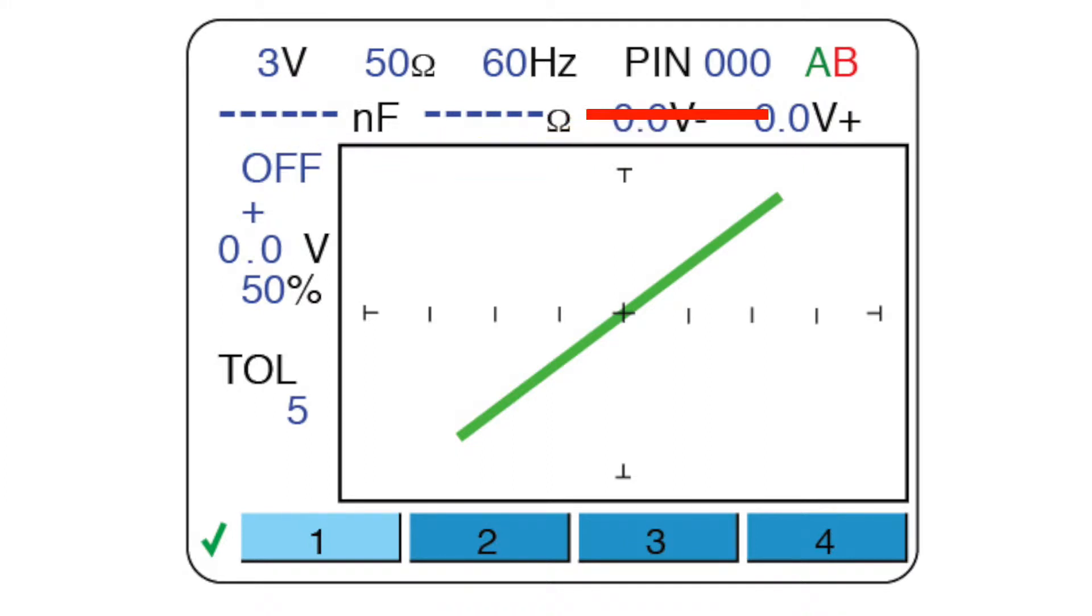Also displayed is the tracker channel, scanner pin number, selected range parameters, and pulse generator settings.